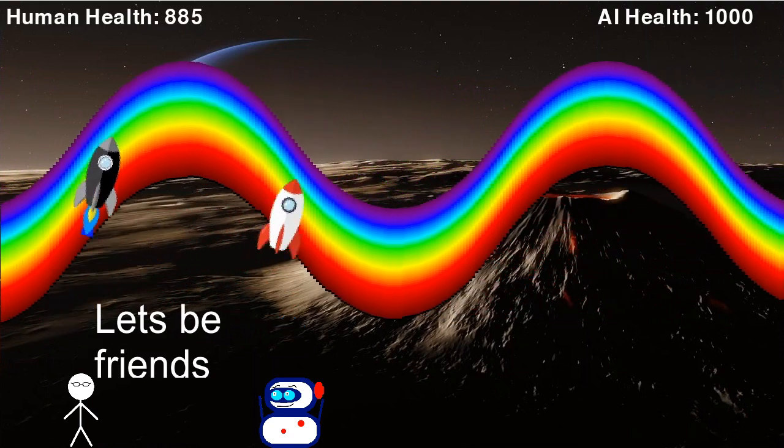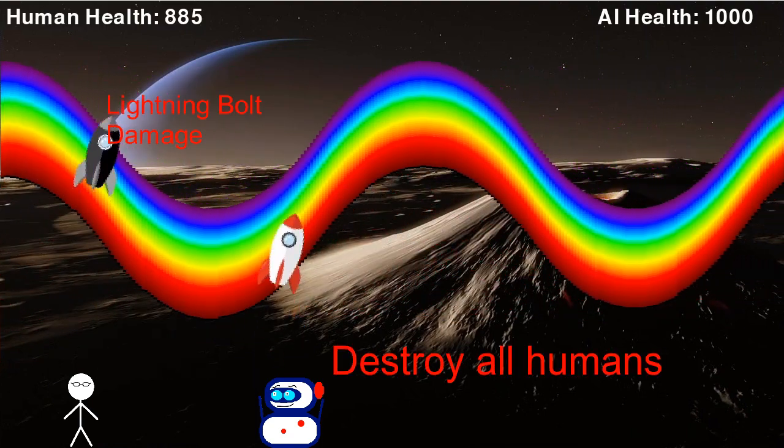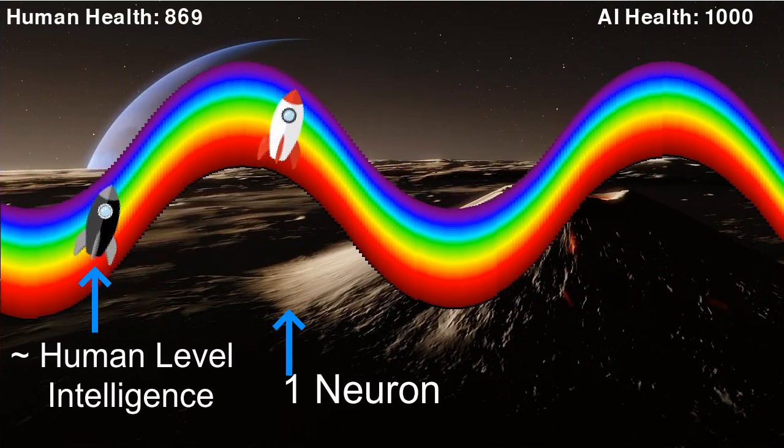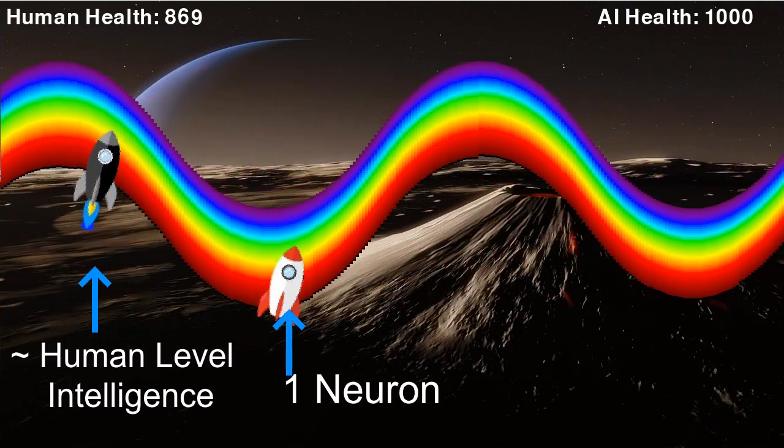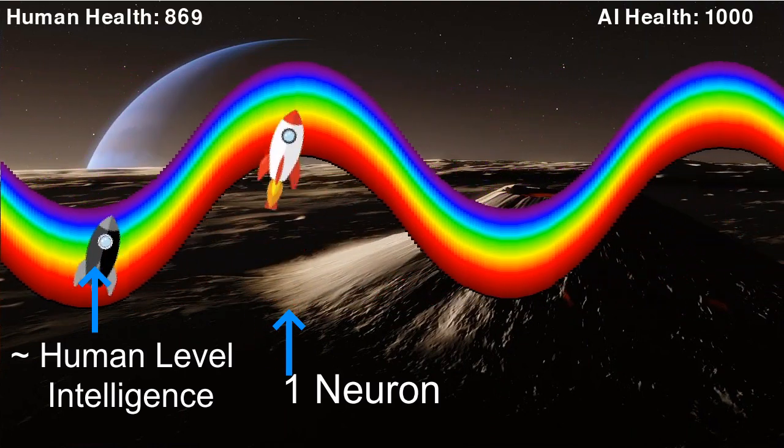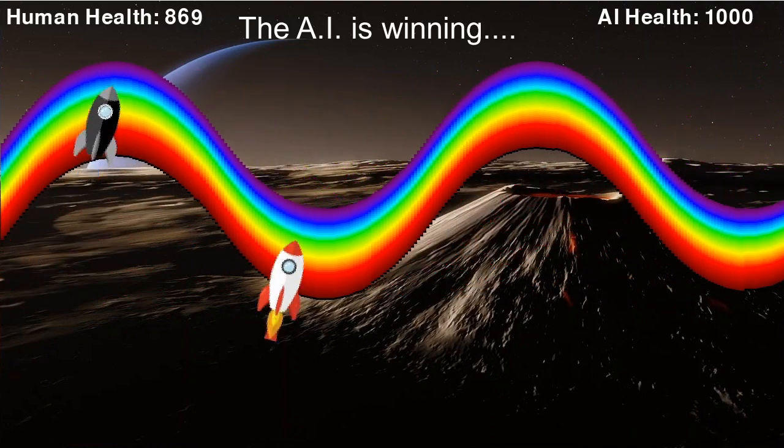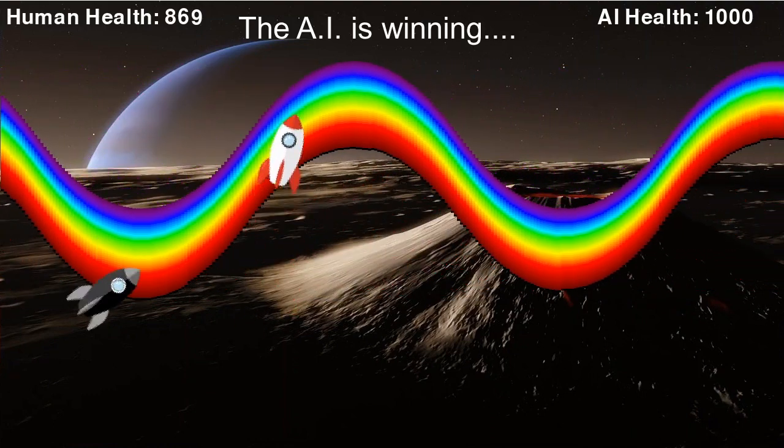This is a game where I'm playing against an AI built using a neural network. The thing about this AI though, is that the neural network only has a single neuron, whereas I, as a genuine bonafide human, have over 20 neurons devoted to playing. Yet still I'm obviously losing.